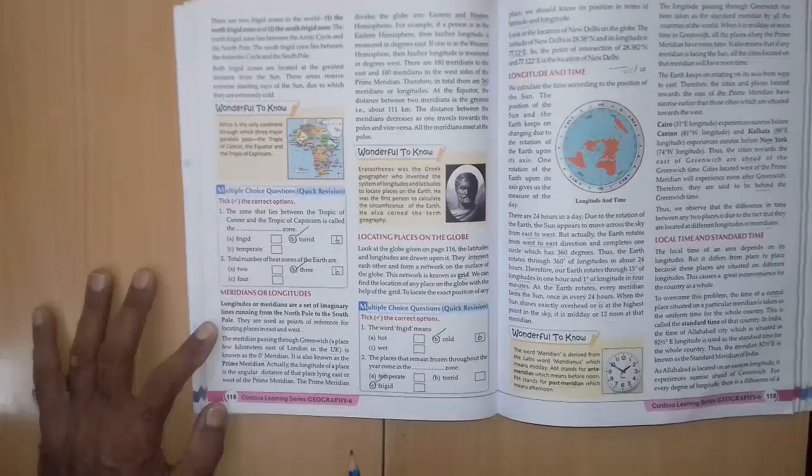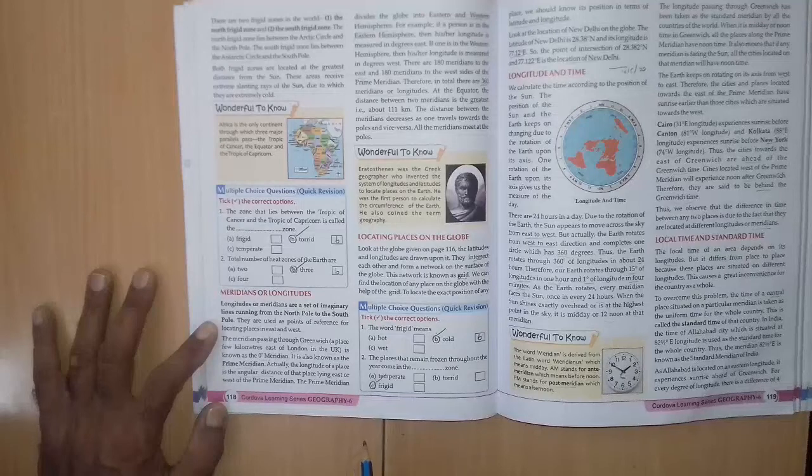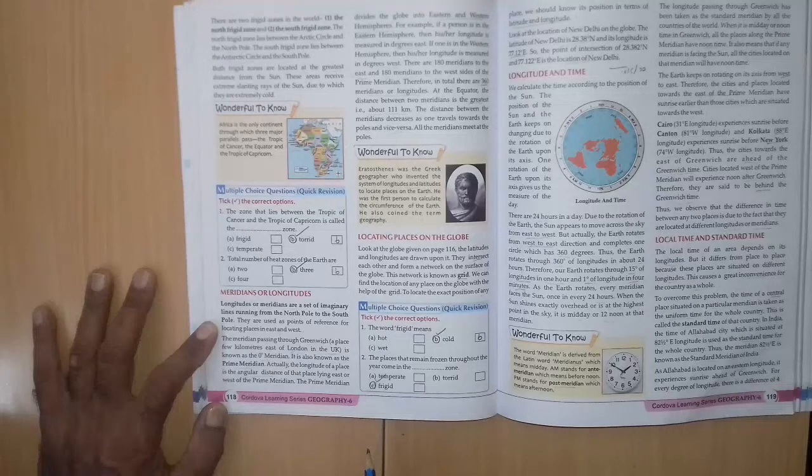2nd question, the places that remain frozen throughout the year come in the dash zone. A temperate, B torrid, C frigid. Right answer is C frigid.